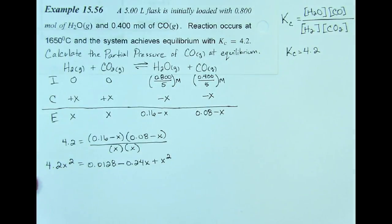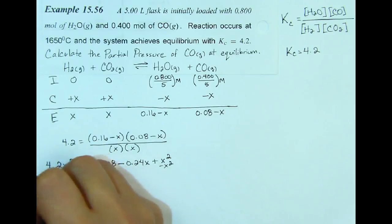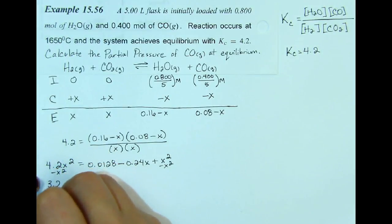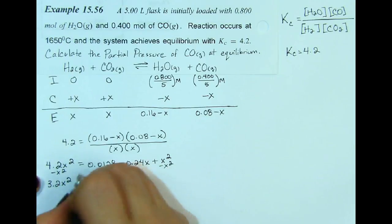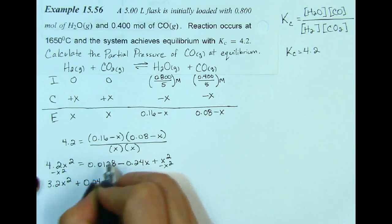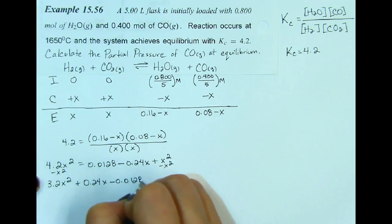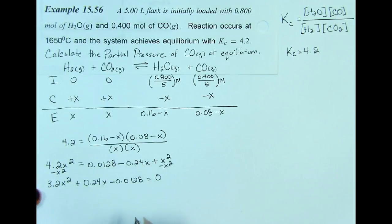Now I'm going to move everything to the left side, starting with subtracting x squared from both sides. That gives me 3.2x squared. Adding 0.24x to both sides and subtracting 0.0128 gives us a quadratic equation equal to 0.